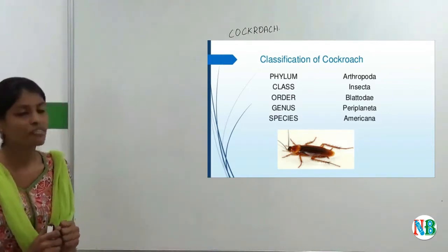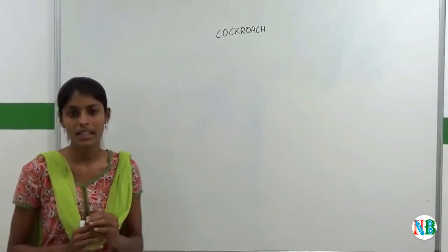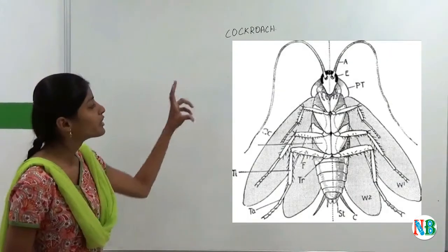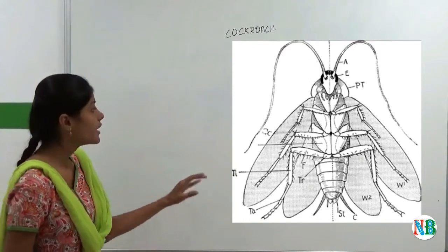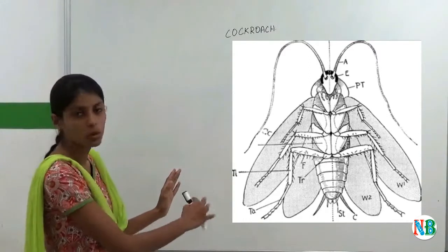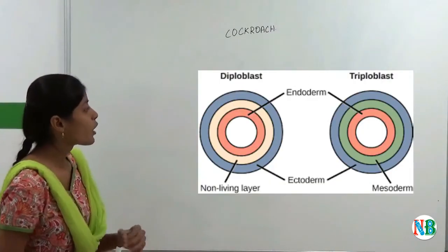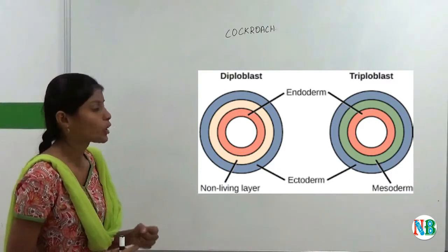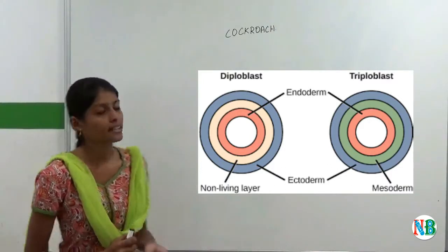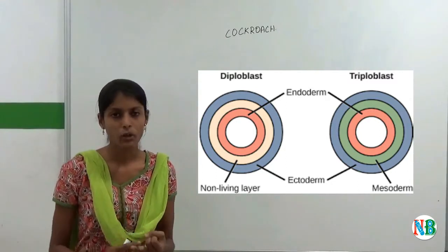And the characteristics of arthropods are they are bilaterally symmetrical. For example, if you divide this cockroach into two halves, they will be similar on both sides. And then they are also composed of three layers of cells. They contain cells like ectoderm, endoderm and mesoderm.